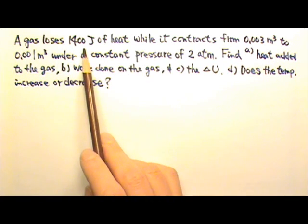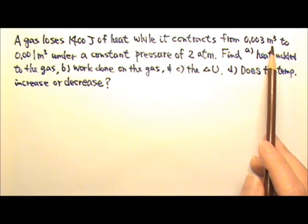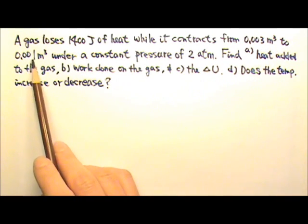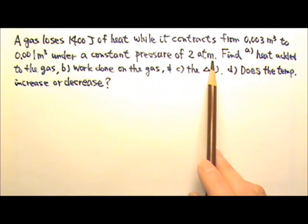A gas loses 1400 joules of heat while it contracts from 0.003 cubic meter to 0.001 cubic meter under constant pressure of 2 atmospheres.